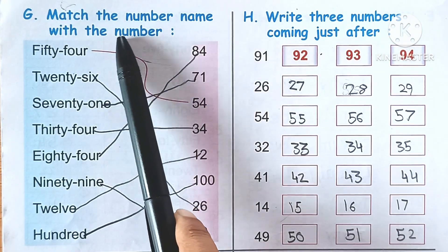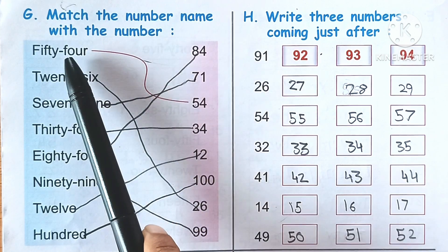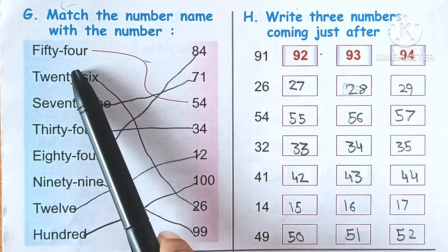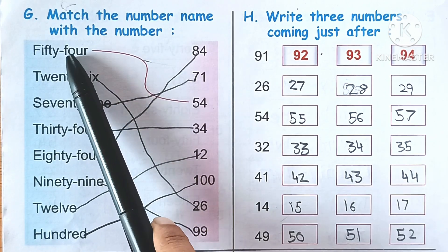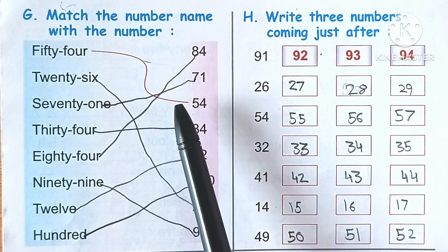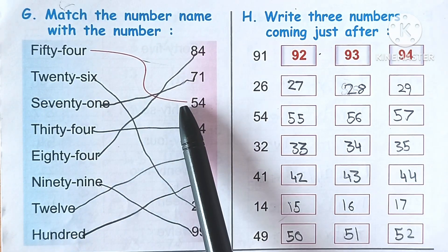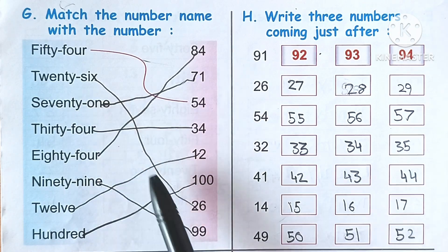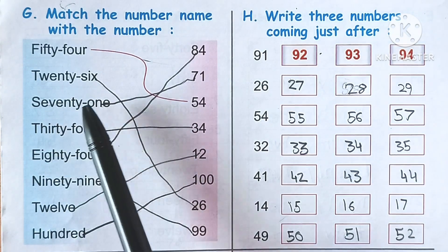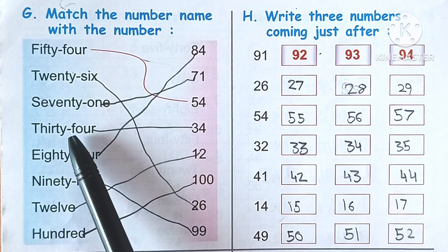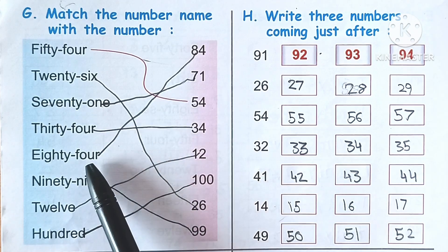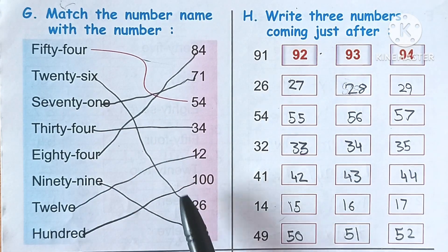Match the number name with the number. This is a very simple question. What you need to do is match the numbers: fifty-four is 54, twenty-six is 26, seventy-one is 71, thirty-four is 34, eighty-four is 84, ninety-nine is 99, twelve is 12, and one hundred is 100.